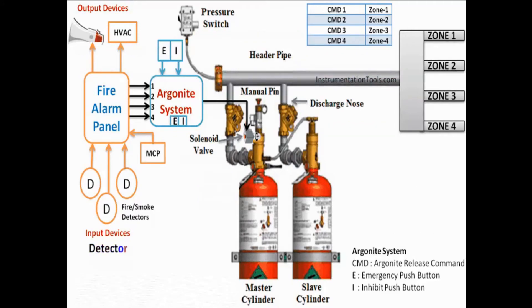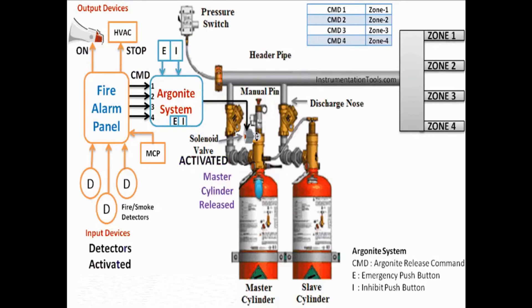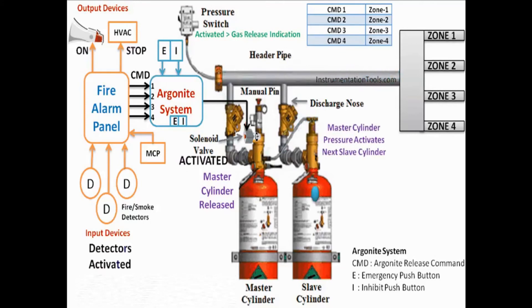As discussed, we have four zones or areas, so we must release the gas to the fire-affected zone only. An on/off valve will be provided in the zone 1, zone 2, zone 3, and zone 4 discharge pipelines (not shown in animation). Whenever we receive a command from the fire alarm panel, the respective zone on/off valve will be opened immediately while the remaining valves stay closed. So if command 4 is received, then the zone 4 valve will be activated.